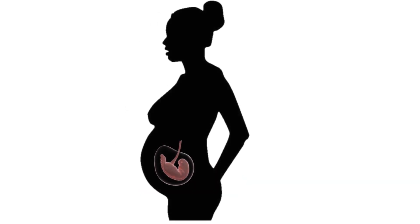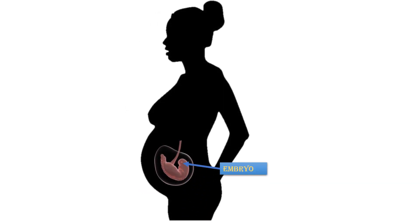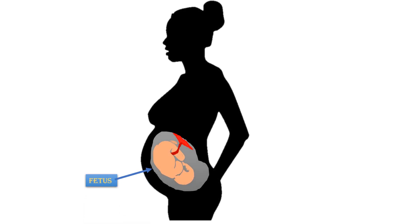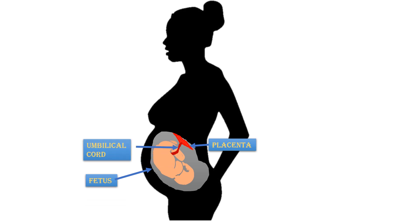The blastocyst now develops into an embryo. Different organs start forming, and the embryo now develops into a fetus. A fetus is an unborn human. An organ called the placenta provides nutrients and oxygen from the mother's blood to the fetal blood and removes waste products from the fetal blood. A tube-like structure called the umbilical cord connects the placenta to the fetus.